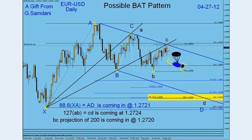If you see the calculation, 88.6% of X to A is coming at 1.2721. And then we're going to count these calculations: this A, B, C, D's C to D at 127% of A to B is also coming at 1.2724 — only three pips difference. So this is how exact the calculations are. Then again, the 200% projection of B to C is also coming right at that spot — one pip difference — at 1.2721. So this number, this number, and this 200% projection are all at 1.2721. This point is like a magnet. This is the point of entry.